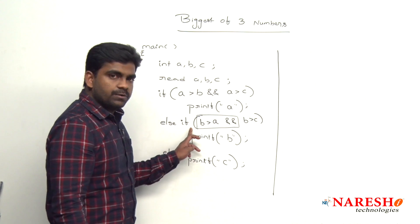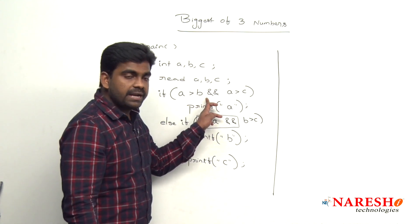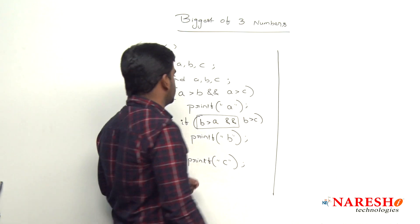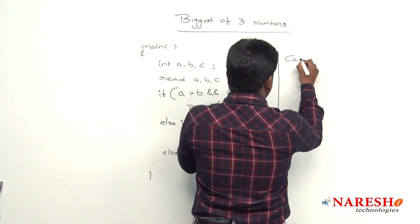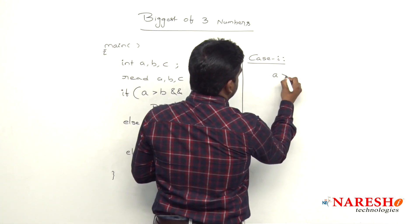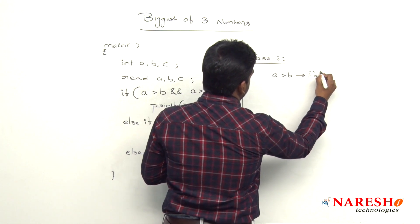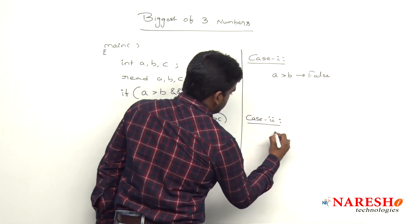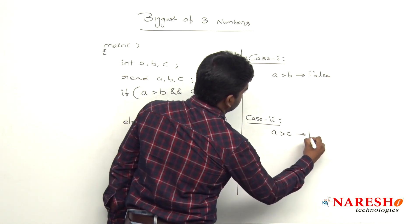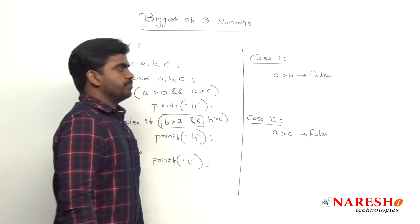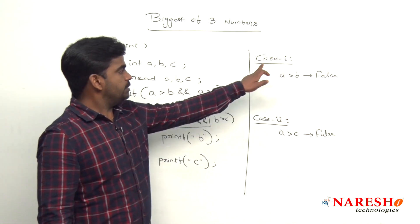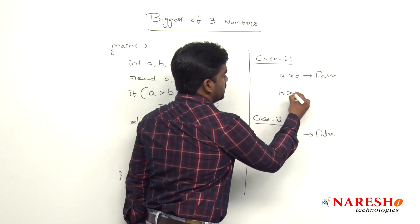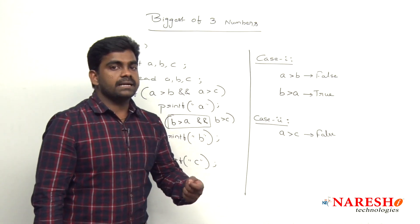When the control reaches the second condition, it means the first condition has failed — either "a greater than b" is false or "a greater than c" is false. Case 1: "a greater than b" is false, meaning b is greater than a is true. So when we are already validating b is greater than a in the else-if, it is already confirmed — b is greater than a is already true. We don't need to validate it again.